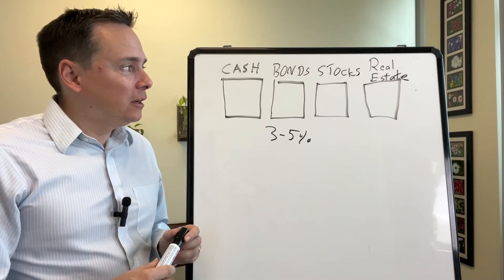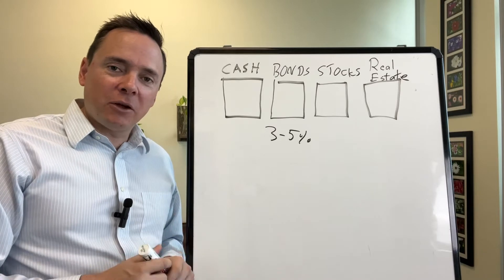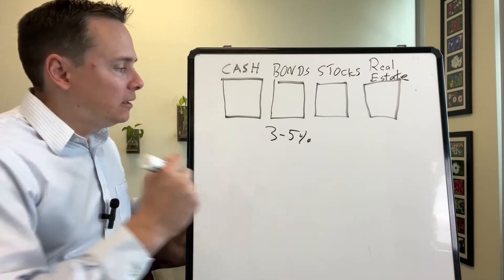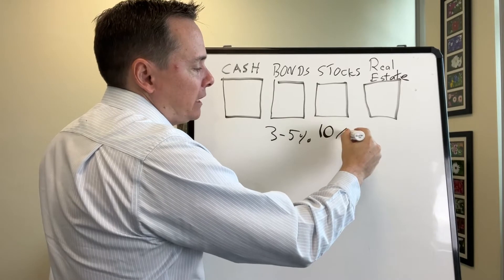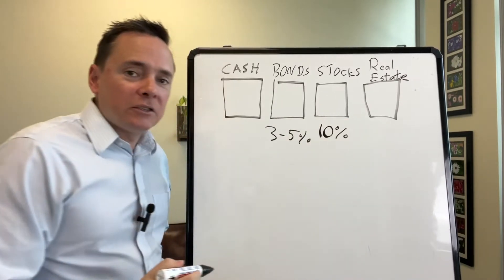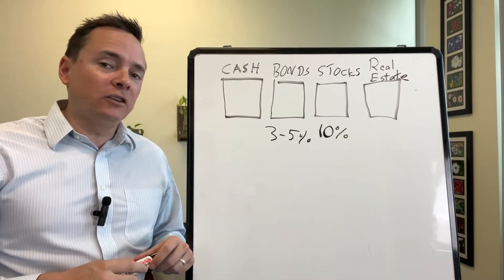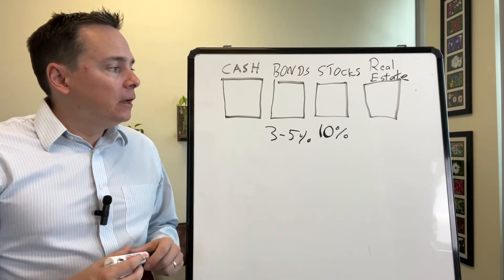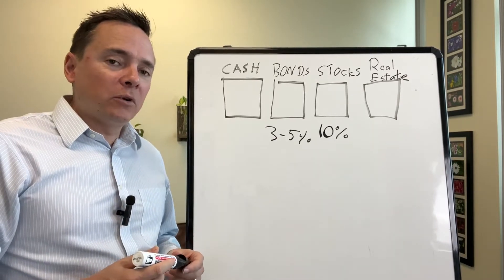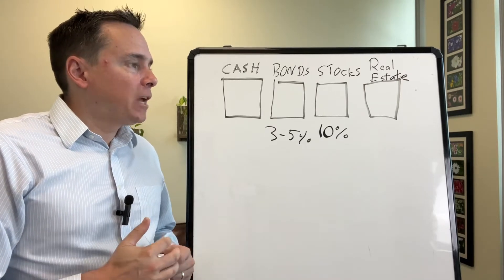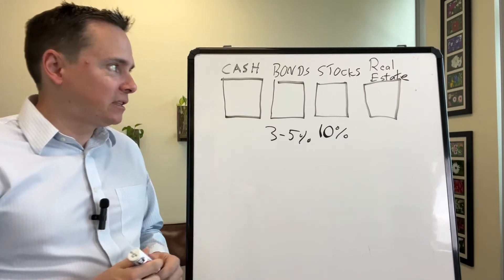So what can you expect from a stock market portfolio? 10%. If between now and the end of your life the market does not return around 10%, it really is historically unheard of. Real estate would just be your house — maybe you have a rental property. I don't really deal with that part of it, but that's what real estate would be.